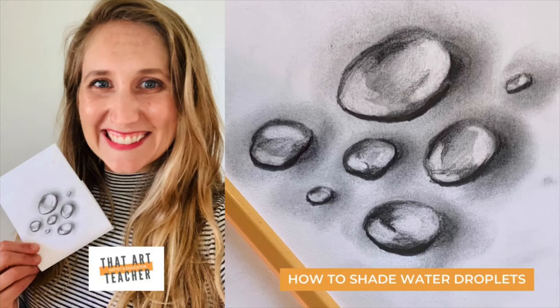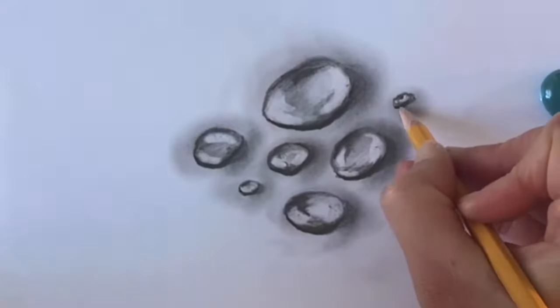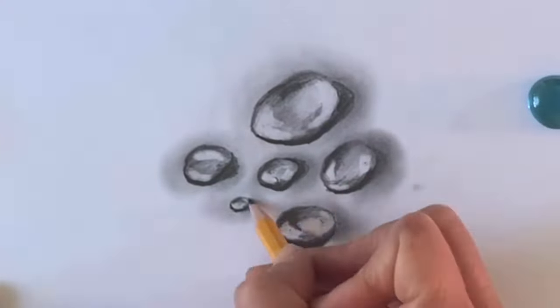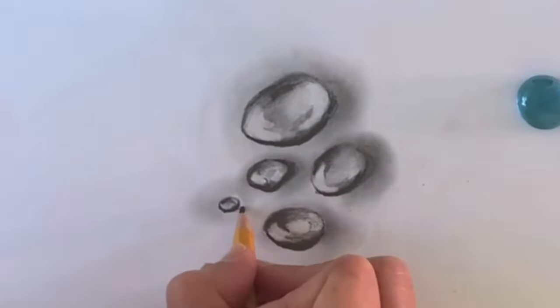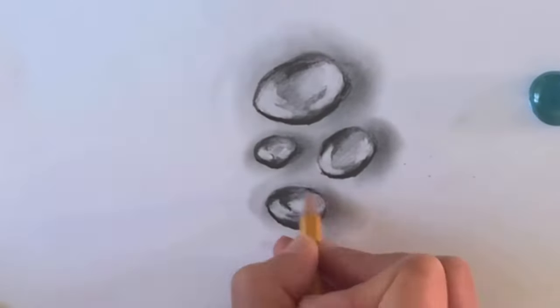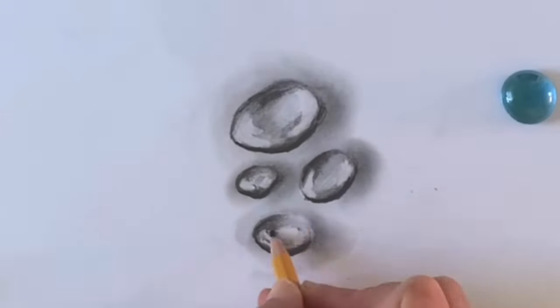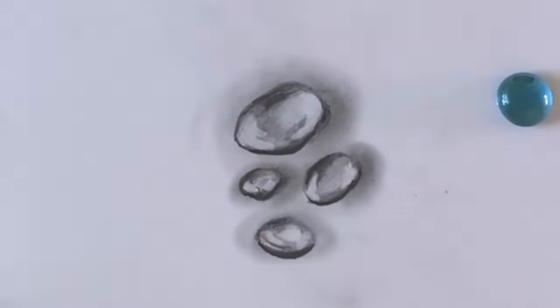This tutorial will show you how to shade realistic water droplets that look so real they could jump off your page. Your materials are minimal—all you need is a pencil to draw with. If you have fancy drawing pencils, awesome. If not, I'm using a pencil that I have in my classroom, it's just an American's Best number two pencil.